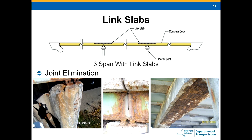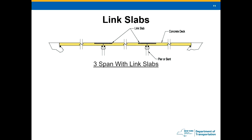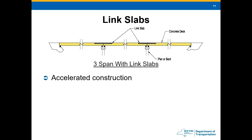The number one reason we use link slabs is joint elimination, to prevent that trickle-down deterioration. We constructed our first UHPC link slab back in 2013 for joint elimination, but over the years we've found other uses. One of those is accelerated construction: in situations with shorter spans, it's much simpler and faster to use individual simple spans — you don't have to do multiple cranes and splicing in the air, you just pick and set it, then put a link slab in at the discontinuity and have a very durable structure.